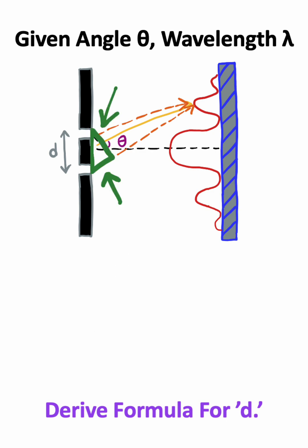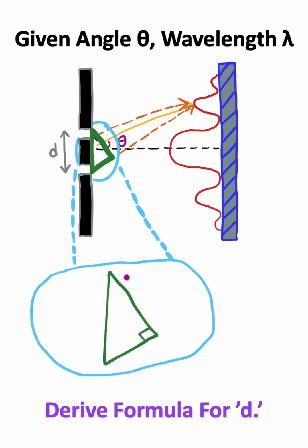You'll notice that we have a right triangle which forms, and the thing that's interesting about this triangle is the angle up here actually matches the angle theta we are given in the problem. The hypotenuse of this triangle matches the distance between the two slits, and the opposite side of this triangle represents the extra wavelength traveled by this light.